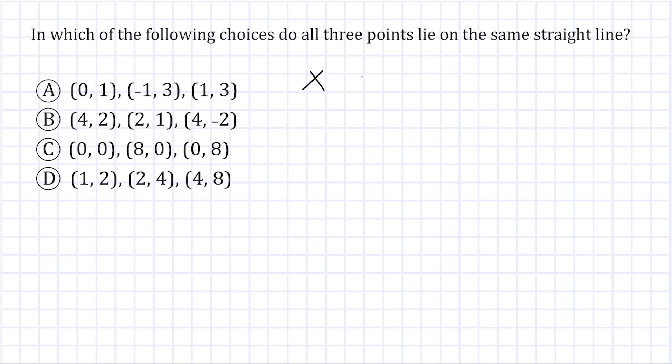Alright, so for choice B, the x values are 4, 2, and 4. So we're going to write 4, 2, and 4. And for the y values, we have 2, 1, and negative 2.